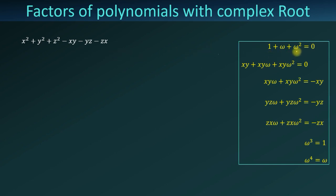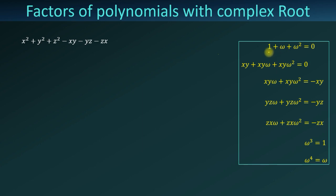We will use properties of cube roots of unity to factor this polynomial, where 1, omega, and omega squared are cube roots of unity. We already know that the sum of cube roots of unity is equal to zero, and the cube of omega is equal to one. We also know that omega to the fourth power is equal to omega.